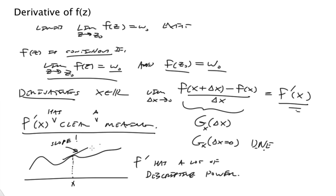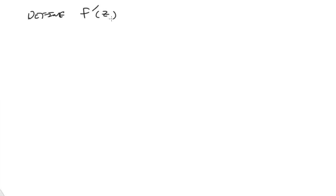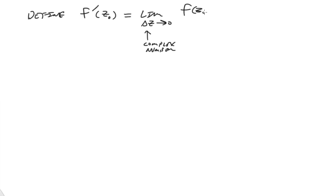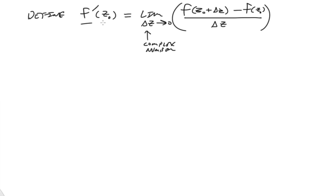The question then is how can we establish derivatives of functions of a complex variable, and what does it mean? So let's go to a new page. We want to define f prime of z at some particular point. We can define that as follows: it's the limit as delta z goes to zero — and that's a complex number — of f of z-naught plus delta z minus f of z-naught, all over delta z. When this limit exists, we say the value is f prime at z-naught. So let's study this limiting process.